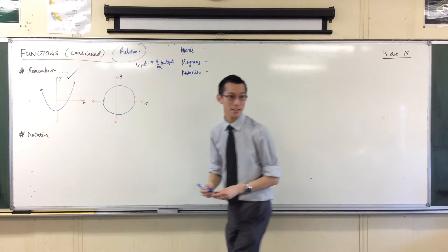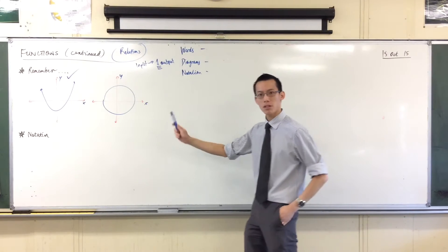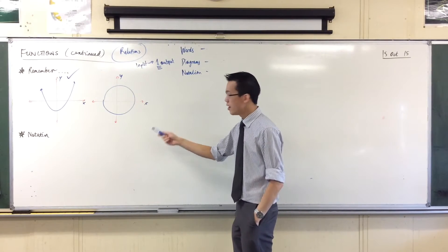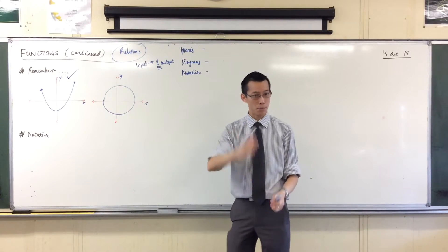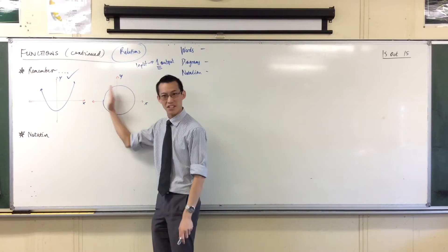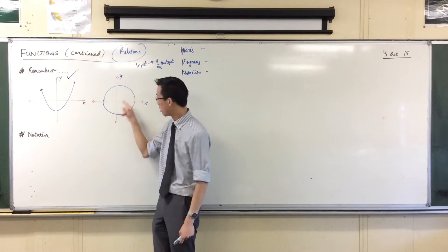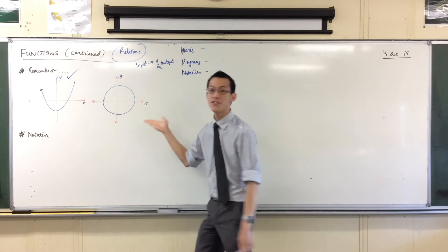So you can see this parabola here is a tick. But when you come across this circle, for a whole bunch of values, if I put that vertical line in, I don't get just one point of intersection. I'll get two.